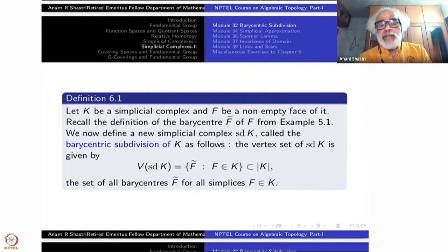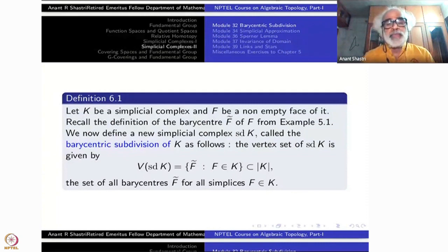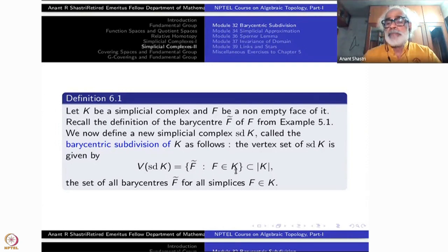We now define a new simplicial complex sd(K) — that is a short notation for subdivision, specifically Barycentric subdivision. All other subdivisions are not of importance for us. This is called the Barycentric subdivision of K. The vertex set of sd(K) is a subset of |K|, namely the set of all barycenters F-hat for each F in K.